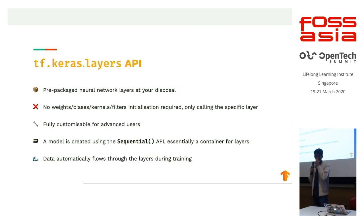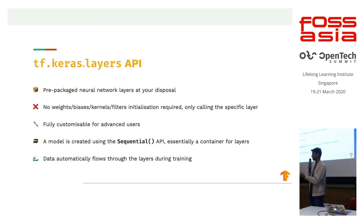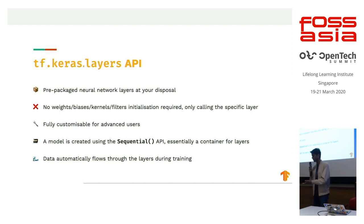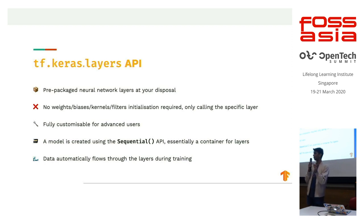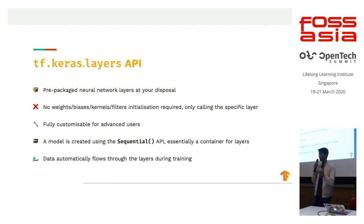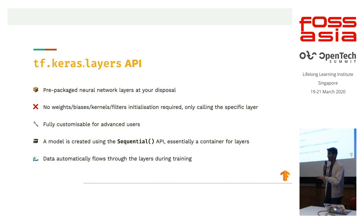TensorFlow Keras has a Layers API that provides different functions and classes representing all these different layers. To implement a fully connected layer in raw NumPy would be a mess, but in tf.keras.layers, all you need to write is 'dense' — dense is another name for fully connected. You pass in a few parameters and you're good to go, with no need to initialize weights or hyperparameters manually. For a convolutional layer, all you type is 'conv2d' and it gets the job done.